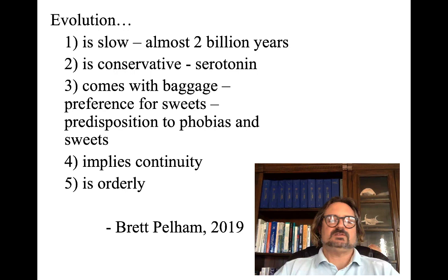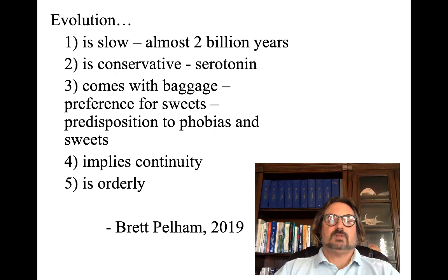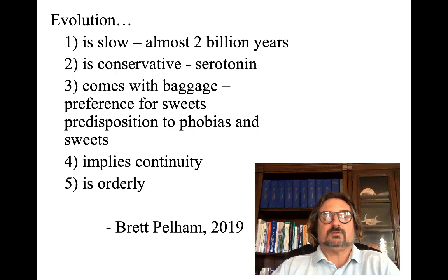Brett Pelham, who wrote a nice textbook on evolutionary psychology, makes the point that evolution is slow — it's been occurring for almost two billion years. Also, it's conservative. For instance, serotonin was useful for less complex organisms such as lobsters to regulate their social order. Higher serotonin levels in lobsters are associated with higher social status. Whenever lobsters win a territorial dispute, the winning lobster usually has higher serotonin levels subsequent to winning, while the loser has lower levels.